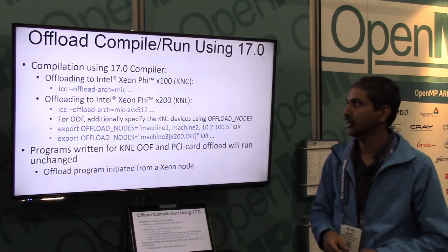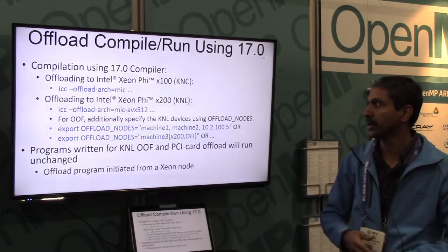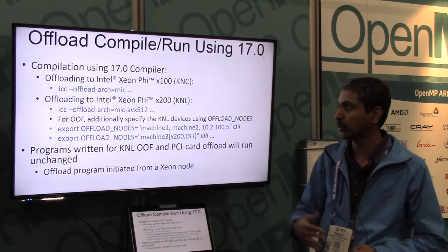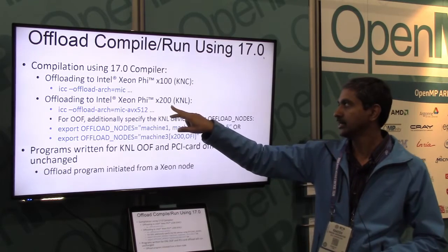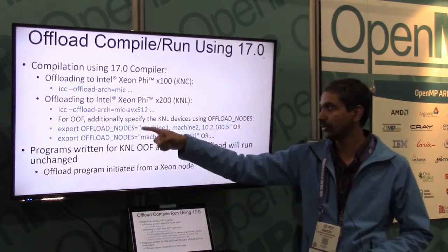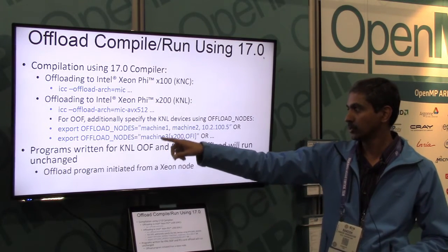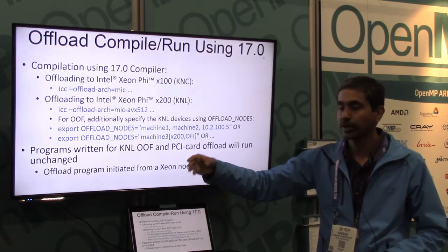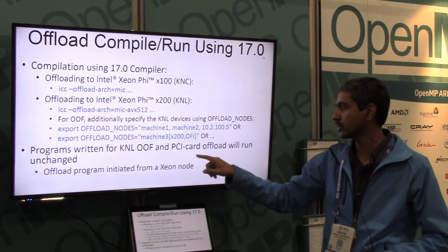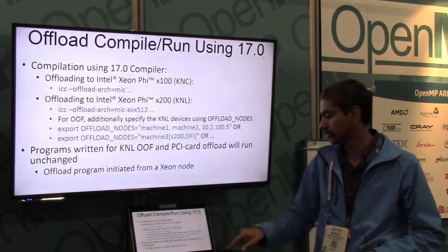This is a one-slide summary of how you target KNC and KNL using the Intel 17.0 compiler. The option '-offload-arch=MIC' means you are compiling for the KNC coprocessor. For offloading to Intel Xeon Phi KNL, you use MIC-AVX512, and if you are using the offload over fabric configuration, you also specify the offload nodes as shown in the previous slide. The same binary will work either in offload over fabric mode or PCI card-based coprocessor mode on KNL, and the program is always initiated from a Xeon node.